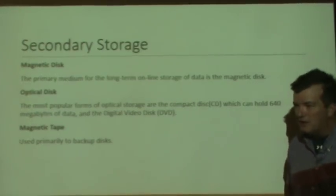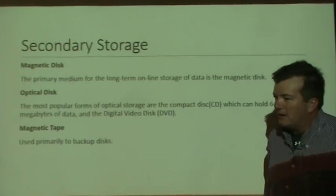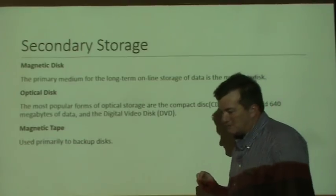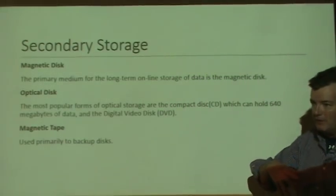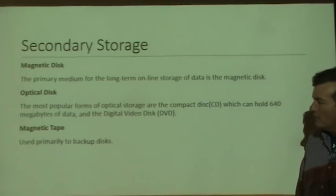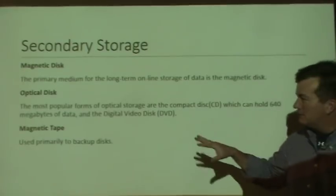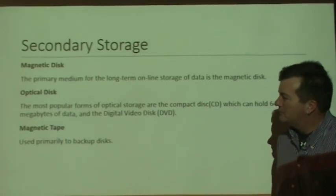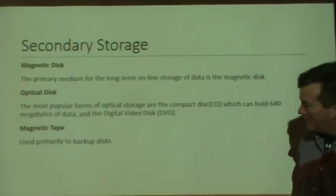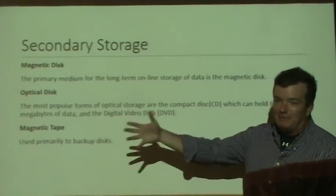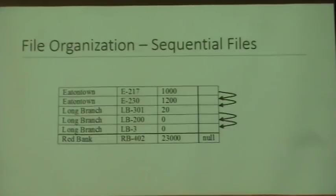Secondary storage is storage that typically takes a long time to get a copy of it into memory, and then what you're doing with it happens very quickly. We can have magnetic disks, optical disks like CDs and DVDs, and magnetic tape, although tape is kind of starting to become outdated. If we go out to tape to bring in data, that will take a while for the tape to load.